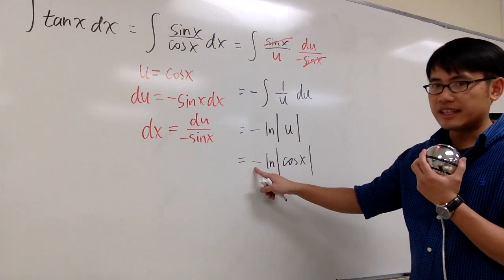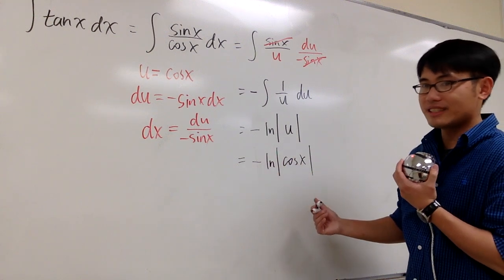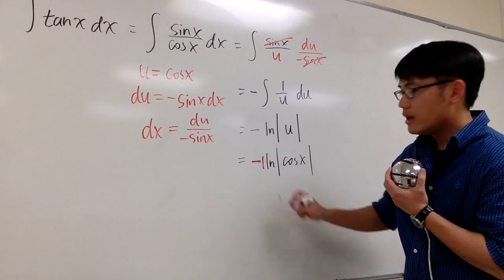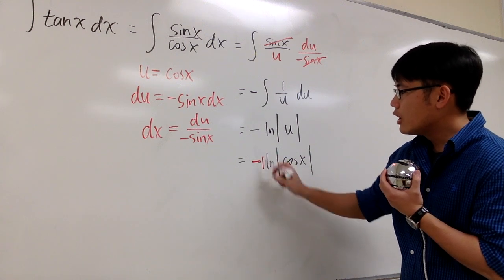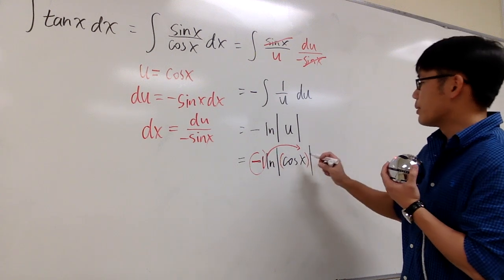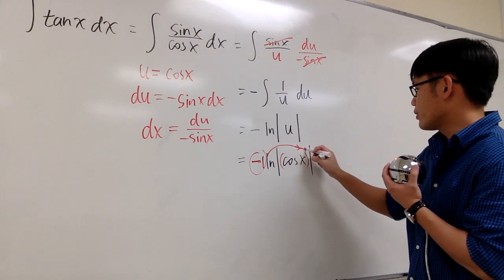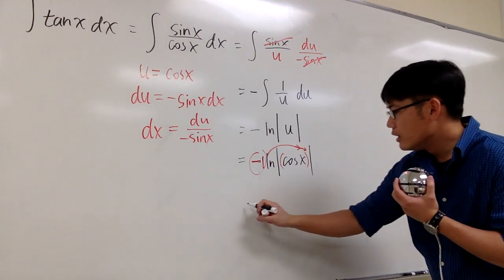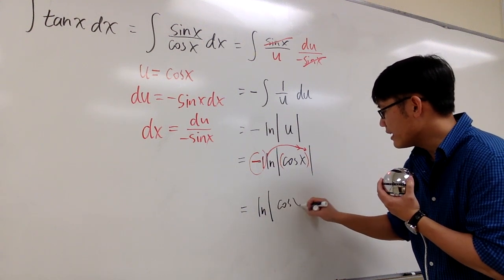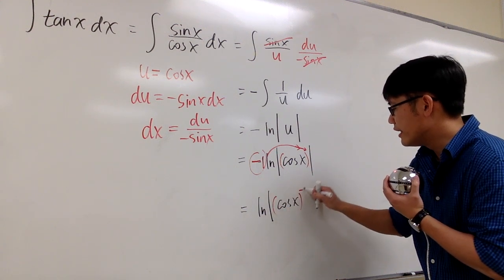However, we don't like to have a negative. Let's see, how can we take care of that? This is that we have negative 1. And when you have a number in front of the ln, we can take the number up and it becomes the exponent. So this is where it technically goes. So this becomes ln absolute value cos x raised to the negative 1 power.